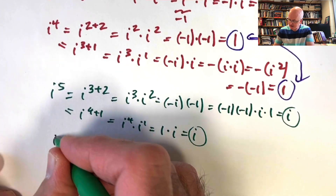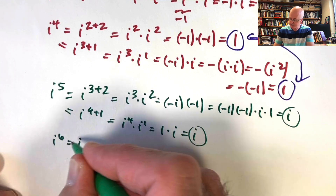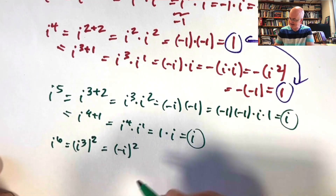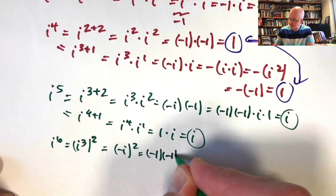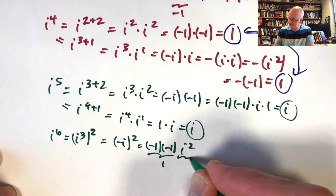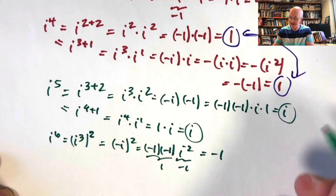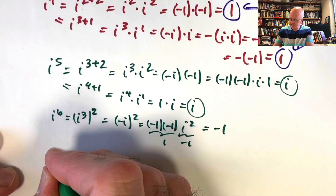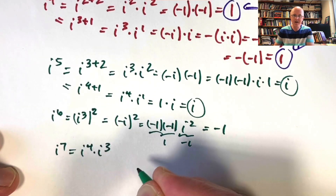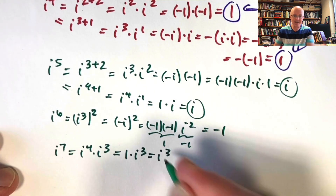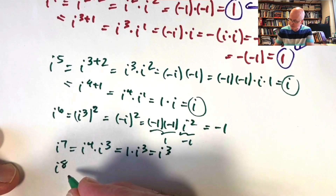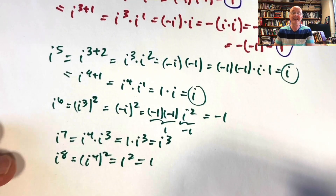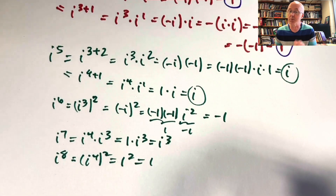Let's try a couple more positive powers. i to the sixth, thinking of it as i cubed squared: i cubed is negative i, so this is negative i squared, which is negative one times i squared, giving negative one. i to the seventh is i to the fourth times i cubed, which is positive one times negative i, so i to the seventh is negative i. And i to the eighth is i to the fourth squared, which is positive one squared — positive one. These numbers are cycling. In fact, they form something called a cyclic group.